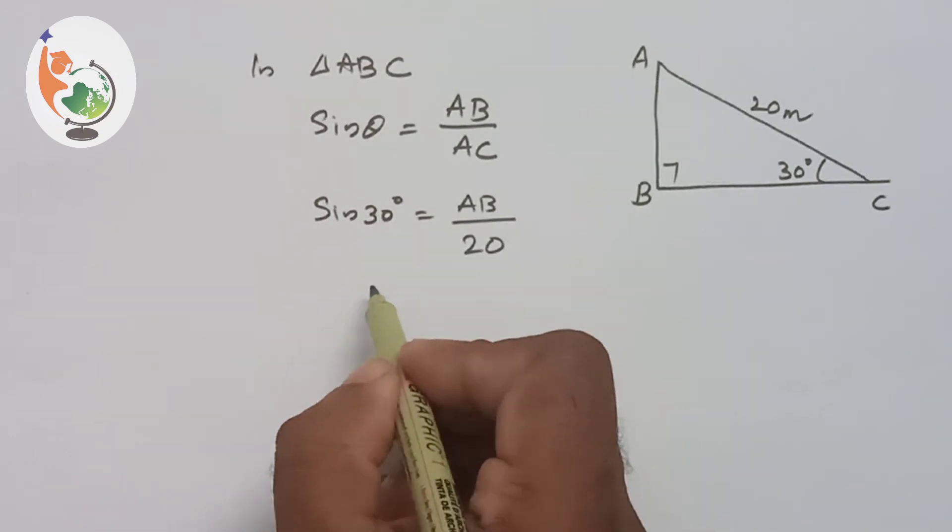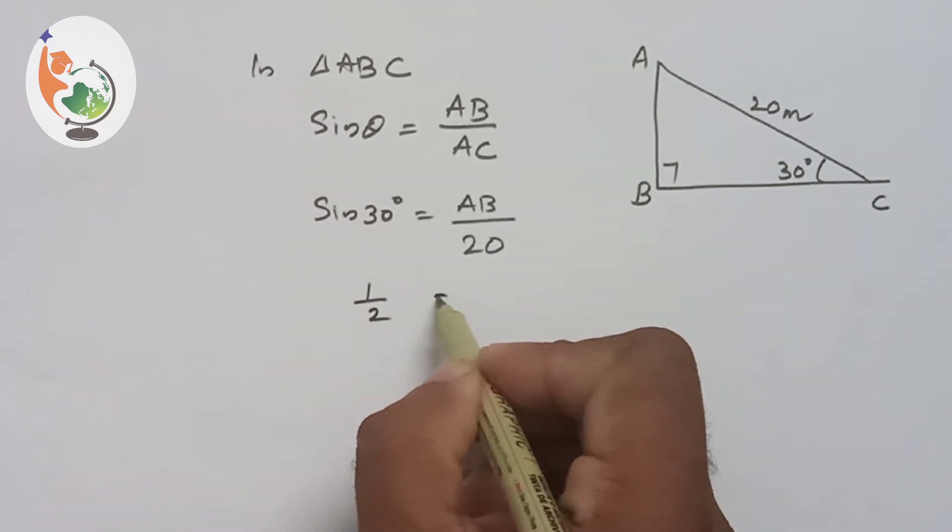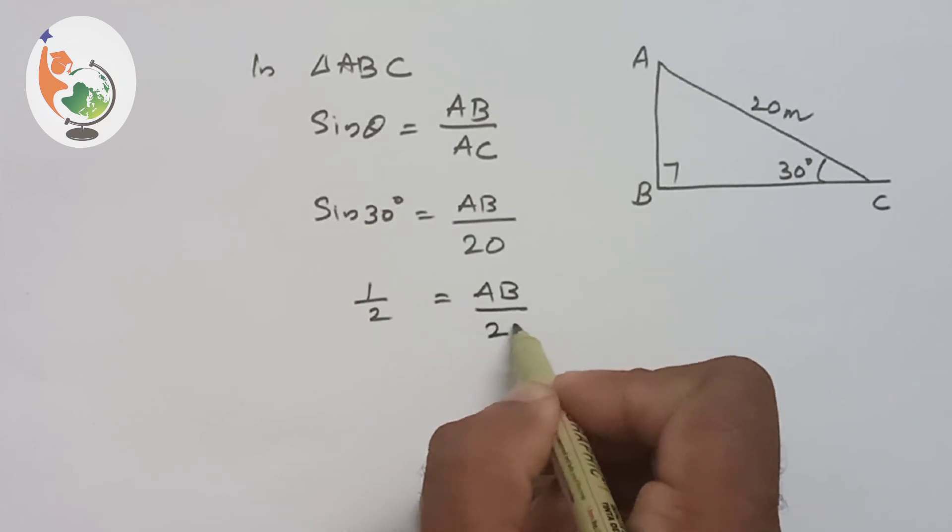The value of sin 30 is 1 by 2. That is 1 by 2 is equal to AB by 20.